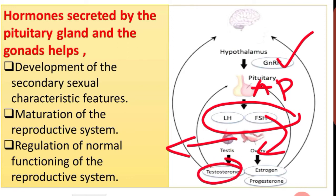In males, LH acts on the testis to produce testosterone — the male sex hormone — as well as stimulate sexual development. FSH and LH act on the ovary to produce the female sex hormone estrogen and stimulate sexual development. This is the role of the pituitary gland hormones.